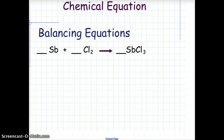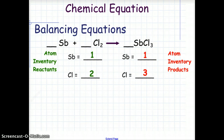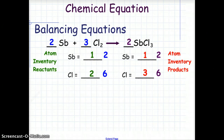If we take Sb — antimony — plus Cl₂ — chlorine — to make SbCl₃, antimony chloride, we note that chlorine is again one of the diatomic molecules, so in its gaseous state it is Cl₂. Beginning with our atom inventory, we see that we have 1 antimony and 2 chlorine on the reactant side, and 1 antimony and 3 chlorine in the products. To balance this, we put a 3 in front of the chlorine and a 2 in front of the antimony, changing the values to 2 atoms of antimony and 6 atoms of chlorine. We then place a 2 as the coefficient in front of the antimony chloride, giving us 2 atoms of antimony and 6 atoms of chlorine in the products. We now have a balanced chemical equation.